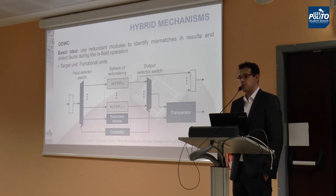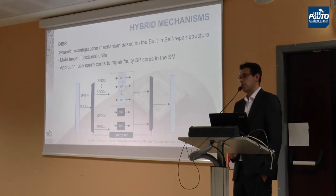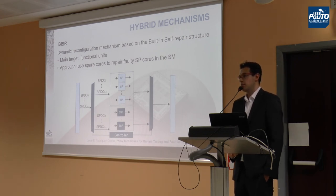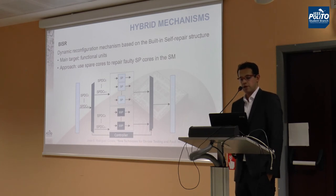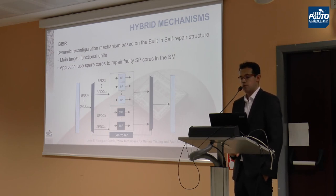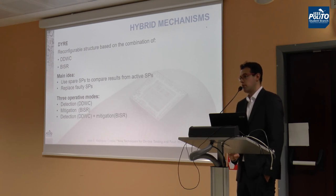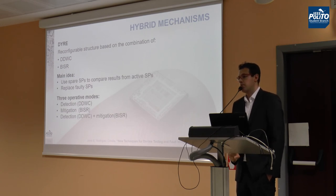This detection structure is shown in dark blue. There is another solution to perform mitigation, composed of an in-field self-repair strategy. In that case I target not the comparison or detection, but the replacement of faulty units. There will be some spare cores per cluster inside my device, in parallel with my functional units, so that if one of them is faulty, I can replace it and continue or increase the reliability and life of my device. Finally, I combine both in one strategy called DIA, obtaining both detection and mitigation capabilities, with three operative modes: detection, mitigation, and both simultaneously.